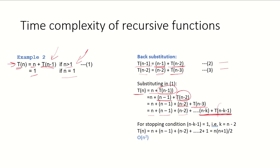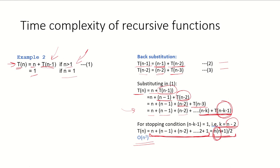For this to stop, n-k-1 has to be equal to 1, which means k = n-2. Substituting k = n-2, we get the sum of the arithmetic progression from 1 to n, which is n(n+1)/2. So the time complexity of this algorithm is O(n²). We take the highest order term and say the time complexity is O(n²).